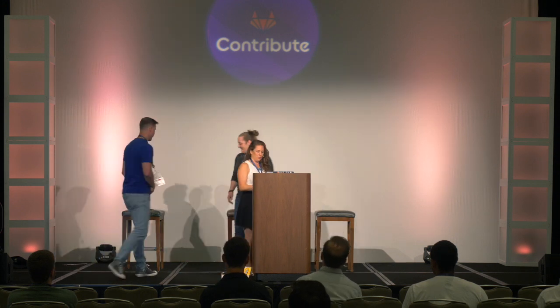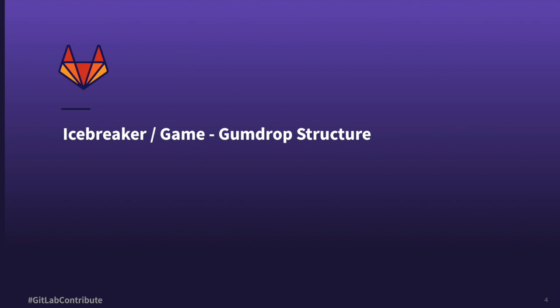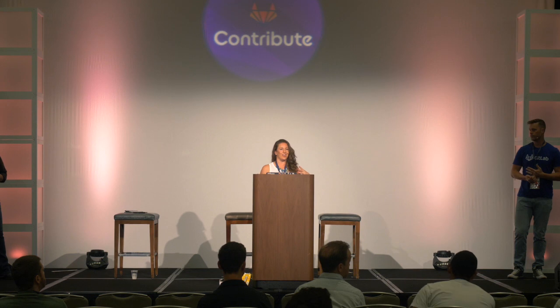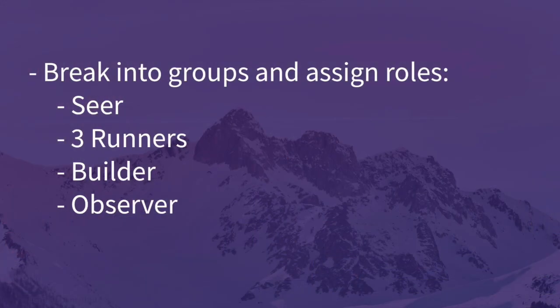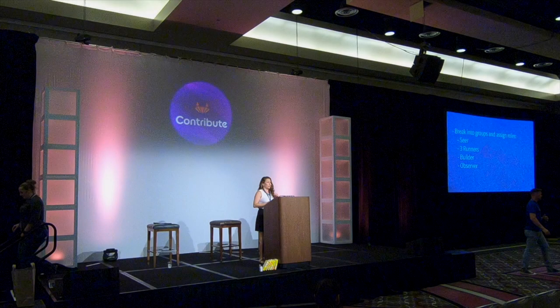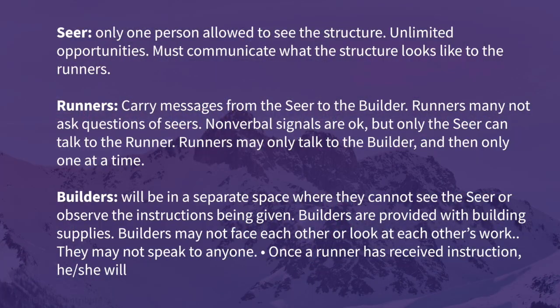We're going to be very hands-on and run a game — it's the gumdrop exercise. Some of you may have done this. It's a good opportunity to learn hands-on how project management is done. We're going to break you into groups of five. There is one seer — the person who looks at the gumdrop structure and describes it to the runners. The runners run back and forth, getting information and passing it to the builders. The builders use the information received to build the structure. You'll also have one observer in each group, who watches everything. Choose somebody comfortable with public speaking because they'll give a rundown of their group at the end.